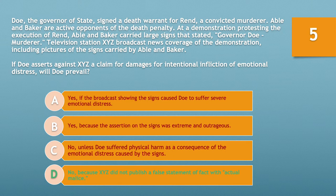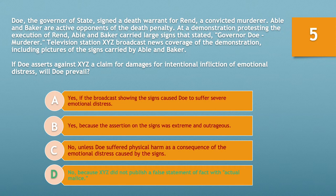If you chose answer D — no, because XYZ did not publish a false statement of fact with actual malice — you'd be correct. Intentional infliction of emotional distress requires: intentional or reckless infliction; severe emotional or mental distress; extreme and outrageous conduct; actual damages; and causation. Conduct is extreme and outrageous if it would cause an average member of the community to immediately react in outrage. Here, process of elimination is the fastest way to solve this question because we know the elements for IIED.